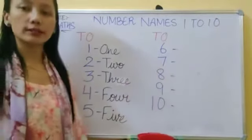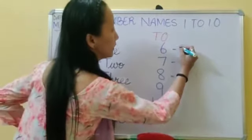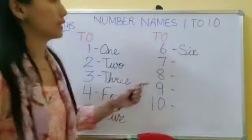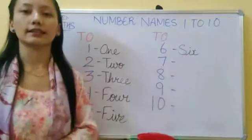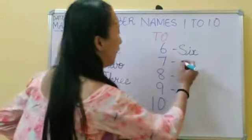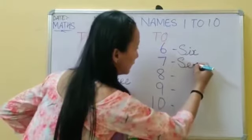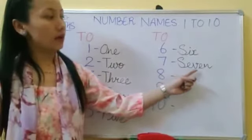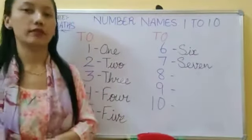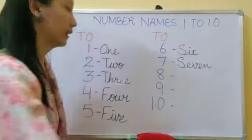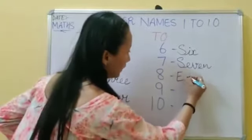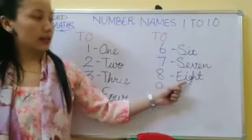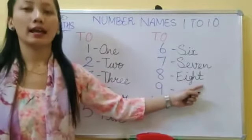Number 6 — what is the spelling of 6? Capital S, I, X — SIX. Number 7 — capital S, E, V, E, N — SEVEN. Very good! Number 8 — E, I, G, H, T — EIGHT.